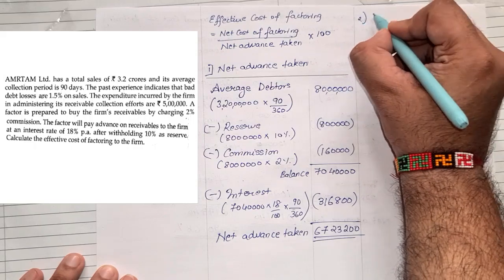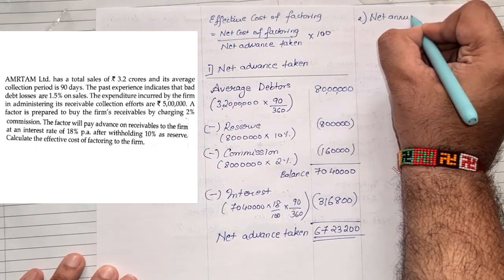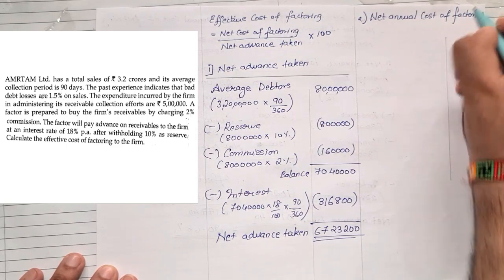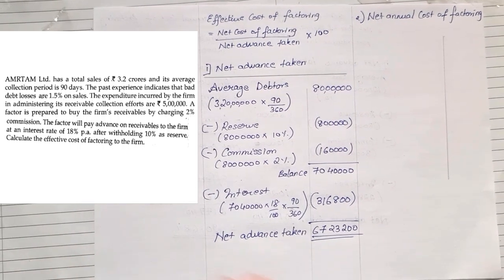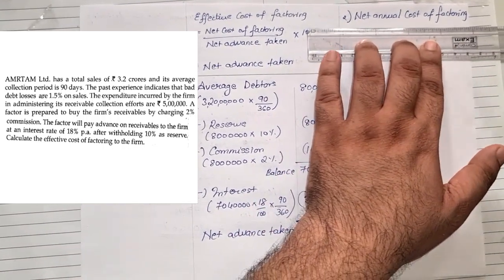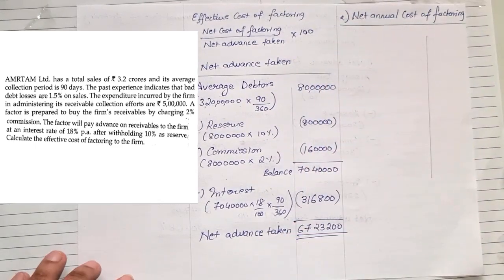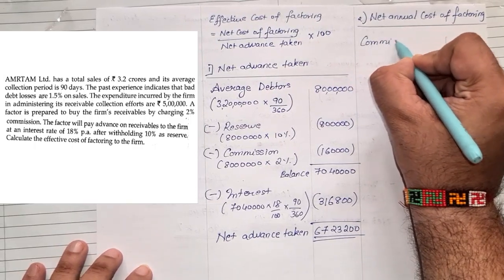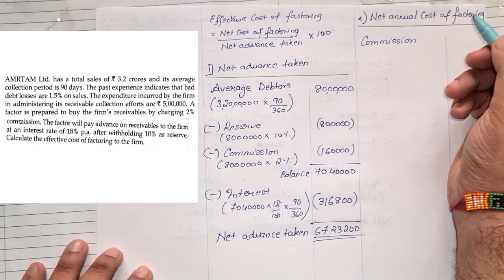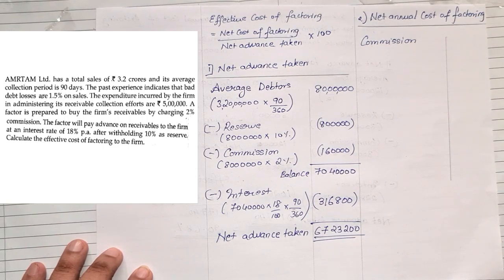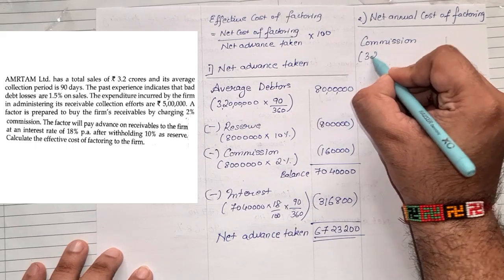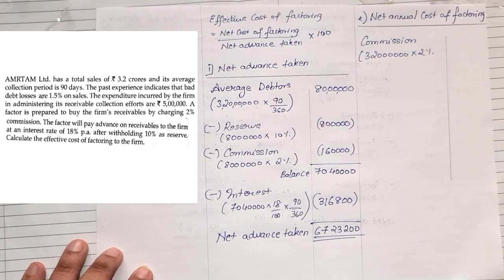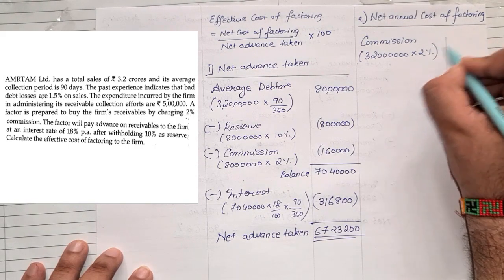Second, we need to find the net annual cost of factoring. The very first thing is commission, taken for the entire year. Sales were 3 crores 20 lakhs into 2% commission, giving us 6 lakhs 40,000. We add annual interest, which is taken on the balance: 70 lakhs 40,000 into 18% equals 12 lakhs 67,200.